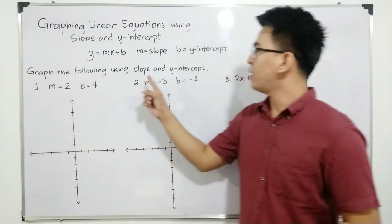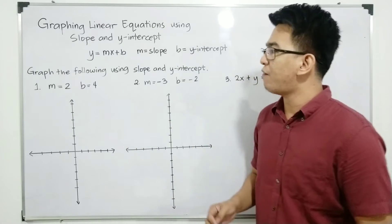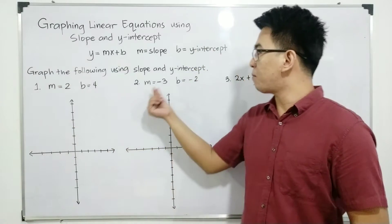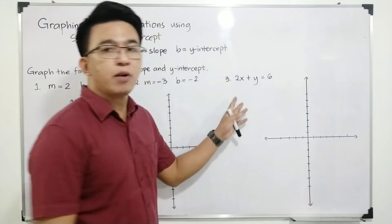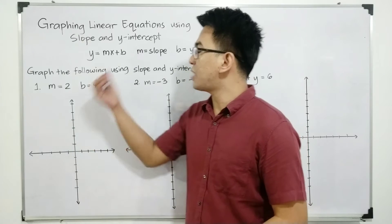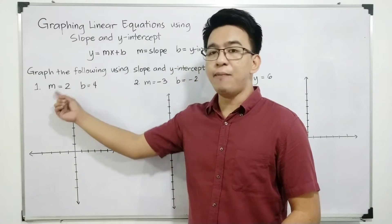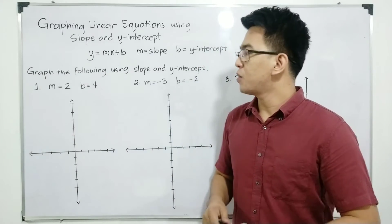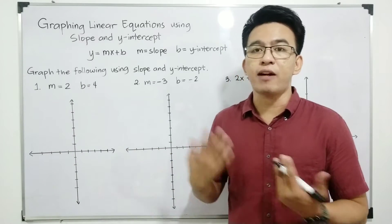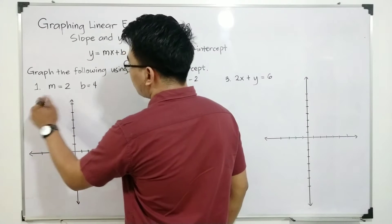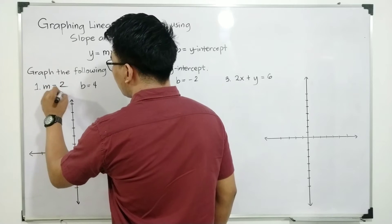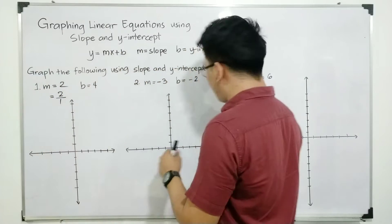Let's graph the following using slope and y-intercept. Item number 1: graph the linear equation with the slope of 2 (m is equal to 2) and the y-intercept is 4. If this is the case, you need to recall that you can represent the slope using rise over run. Therefore, if you have a slope of m equal to 2, that is also equal to 2 over 1.